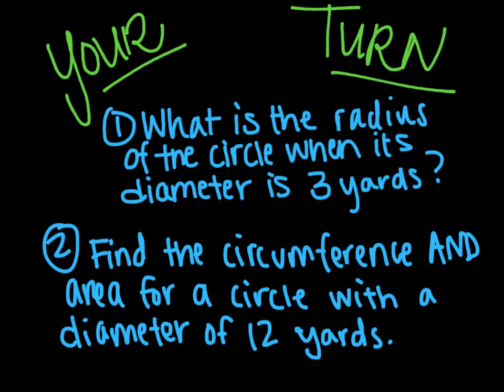All right, your turn to prove that you've learned this stuff. Number one, what is the radius of a circle when the diameter is 3 yards? And number two, what is the circumference and area for a circle with a diameter of 12 yards? Go ahead and make sure you're showing all your work. Solve this and then check in with me when you're done for the answers.